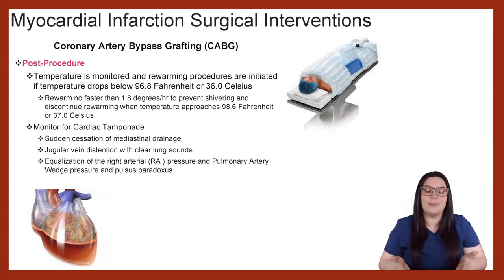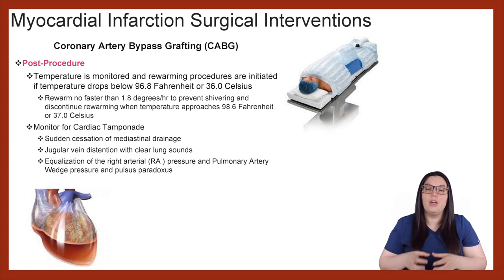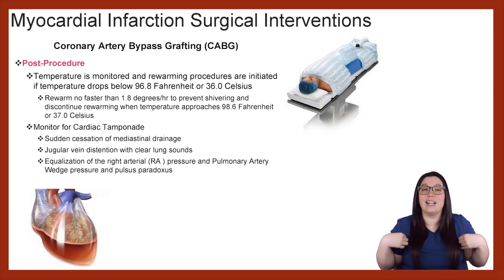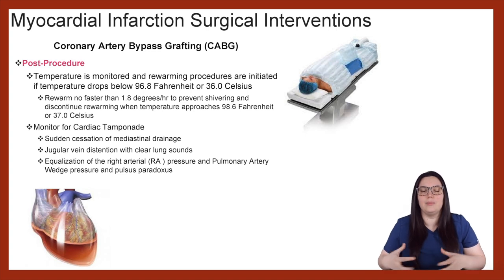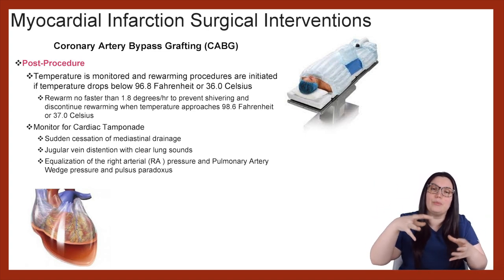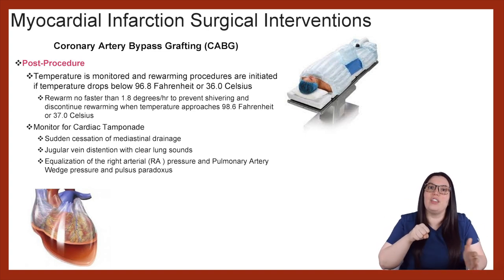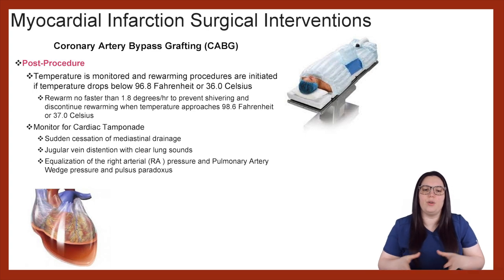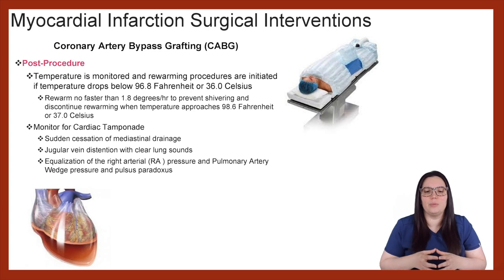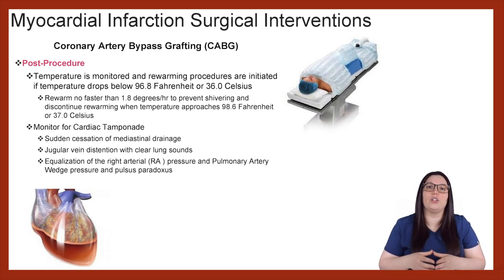We also want to monitor for cardiac tamponade. If a patient has a mediastinal chest tube and all of a sudden drainage suddenly stops, we need to be looking at the systemic circulation for congestion. You may see jugular vein distension; lung sounds will most likely sound clear because we're not having left-sided issues — everything is backing up into the circulatory system due to pressure from blood sitting in the pericardial sac and pushing on the heart. You might also see equalization of the right atrial pressure and pulmonary artery wedge pressure, and potentially pulsus paradoxus — which is that fall in systolic blood pressure during inspiration. We need to monitor blood pressure very closely for these equalization pressure changes.